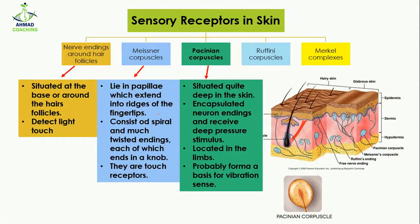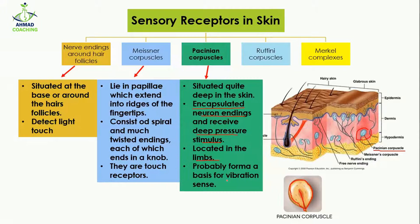Pacinian corpuscles are situated quite deep in the skin — not on the surface or at the tip of the dermis, but deep inside the dermis. They are encapsulated, meaning they have a capsule which protects them. The nerve endings are protected by these capsules. They receive deep pressure stimulus and are normally located in the limbs, for example the leg area.